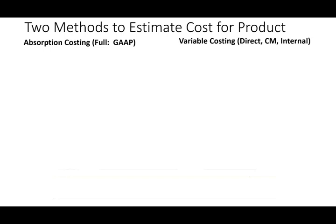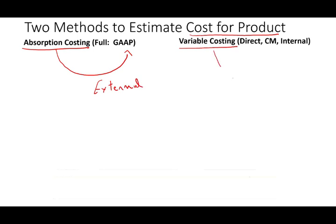Welcome to this session on absorption costing and variable costing. These are two methods to estimate cost for a product. Absorption costing uses GAAP and is used for external reporting purposes. Variable costing is used for internal decision making — sometimes called the contribution margin method or the direct method.